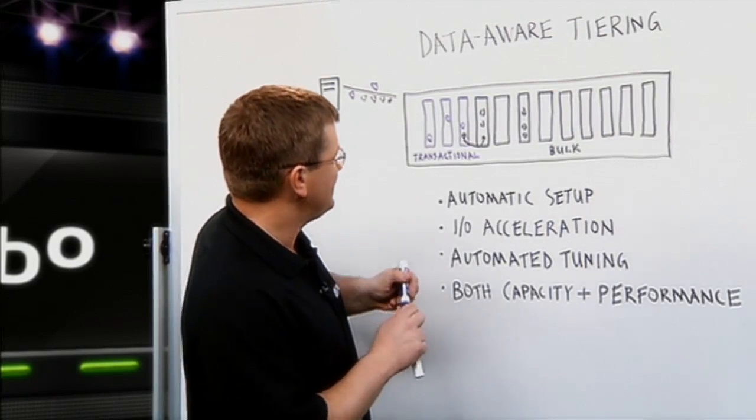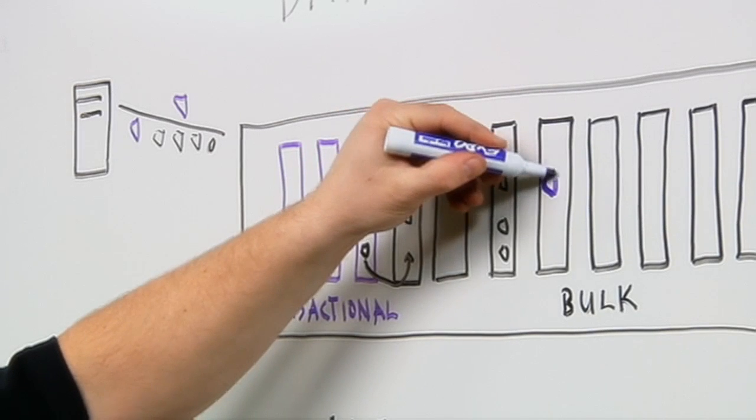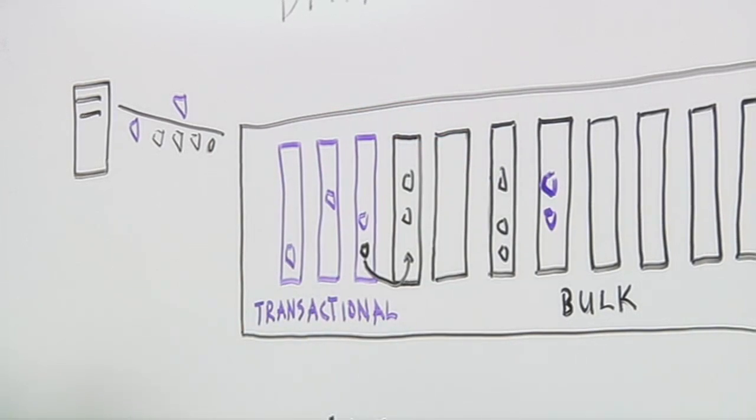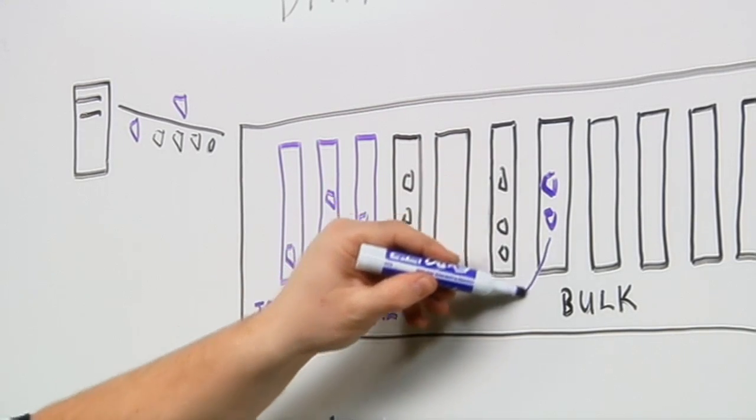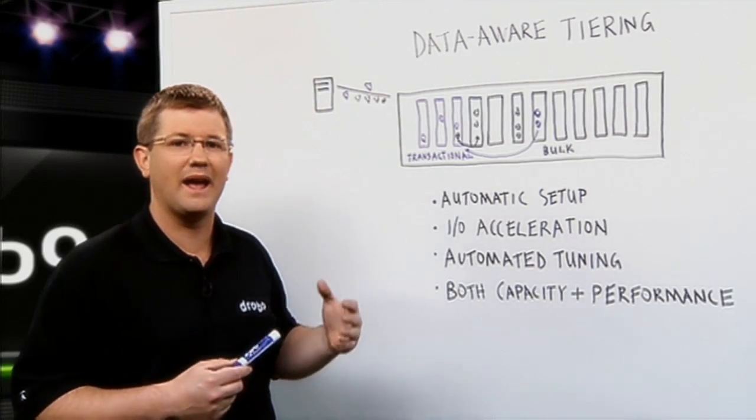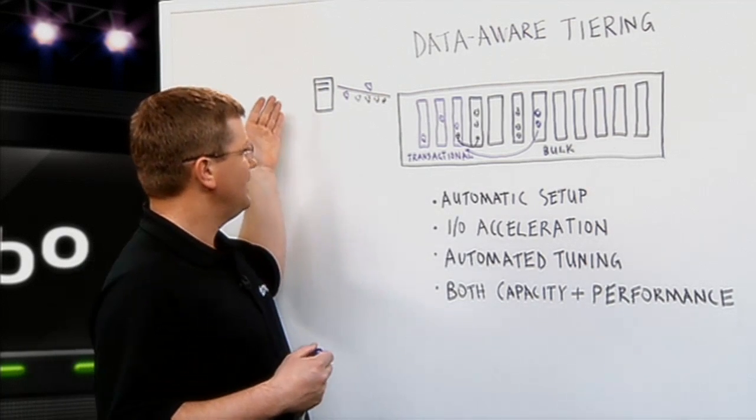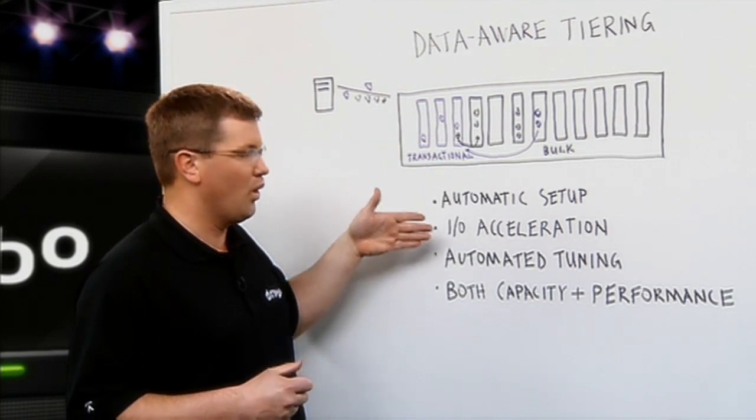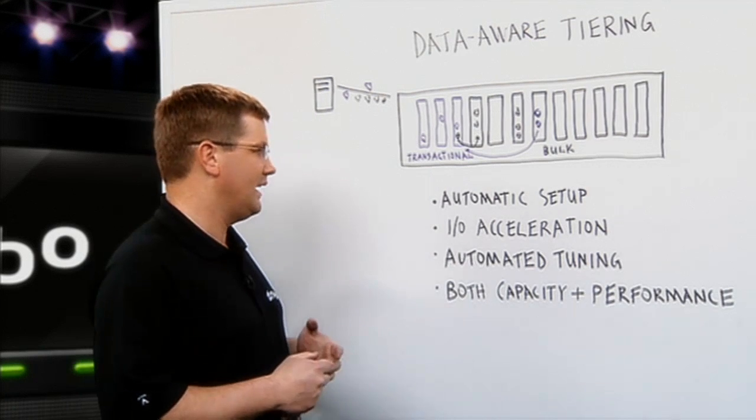Same with data that becomes hot. If it's in the bulk tier and data becomes hot, or your array starts with all hard disk drives and you add SSDs later on, that hot data will automatically be migrated over into the transaction tier. So the array not only optimizes itself initially when writing in, but also over time and it will adjust and tune for itself.